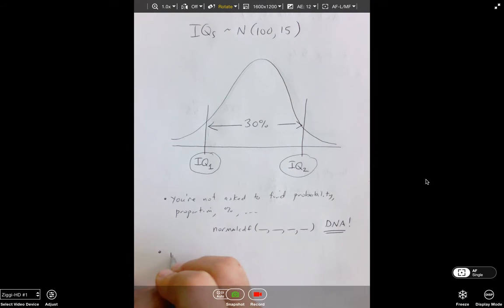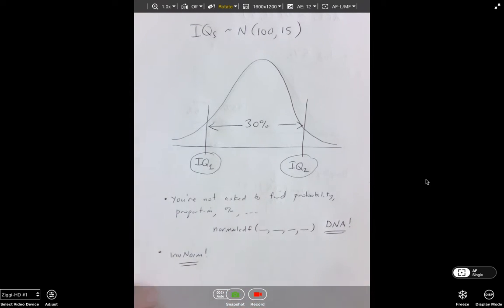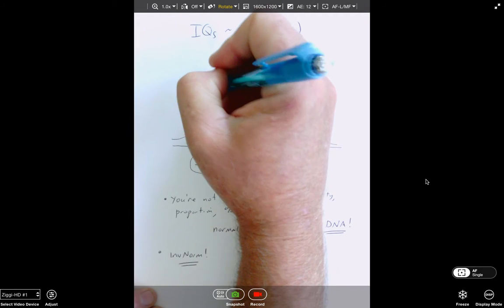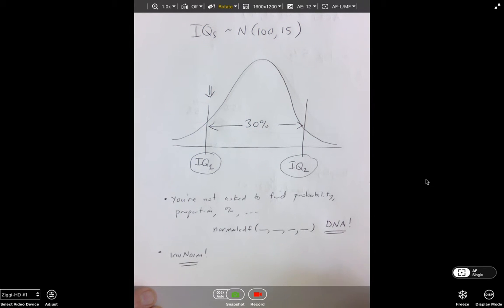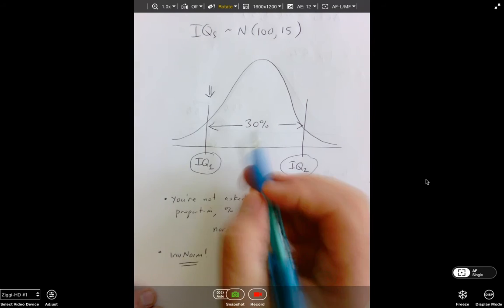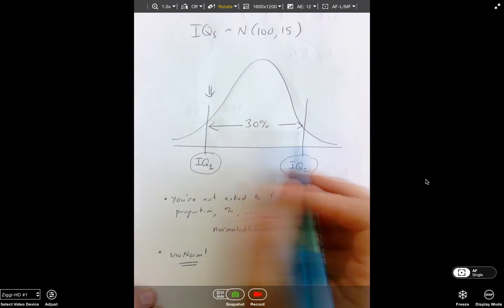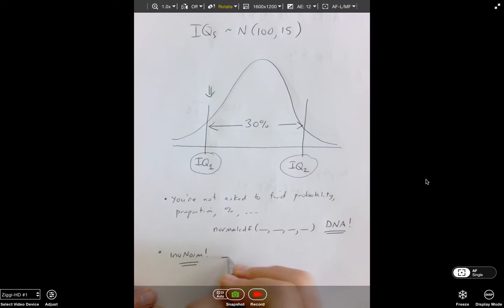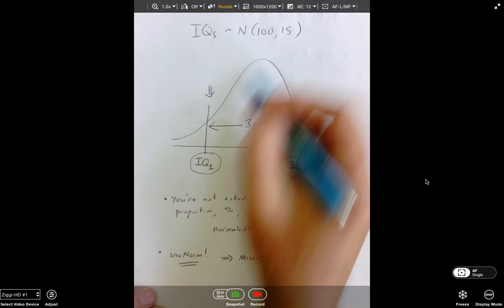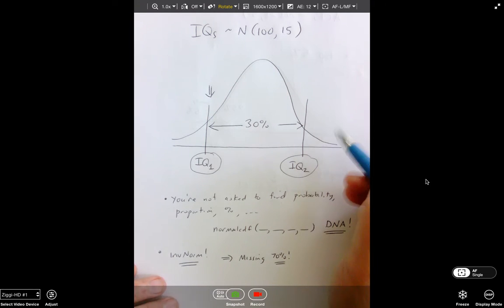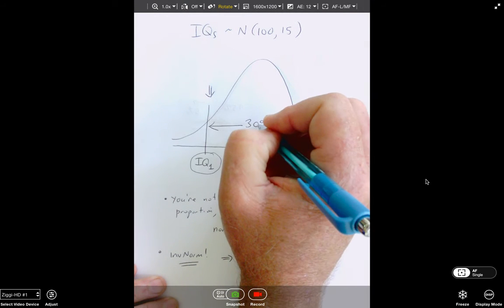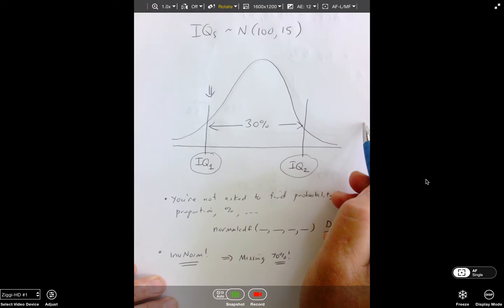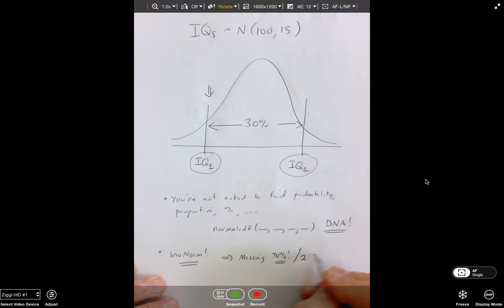You're not being asked to find probability, proportion, percentage, yada, yada, yada. So the normal CDF key that I taught you in the previous video does not apply. You are being asked to find a score from the distribution. Actually, you're being asked to find two scores from the distribution. So, guys, the key that's going to apply here is the inverse norm. So let's focus on this one right here. What do we need to be able to work inverse norm? Percent below. So, guys, if I've got 30% between here and here, and I want to find the middle 30%, it tells me right off the bat that I am missing 70%.